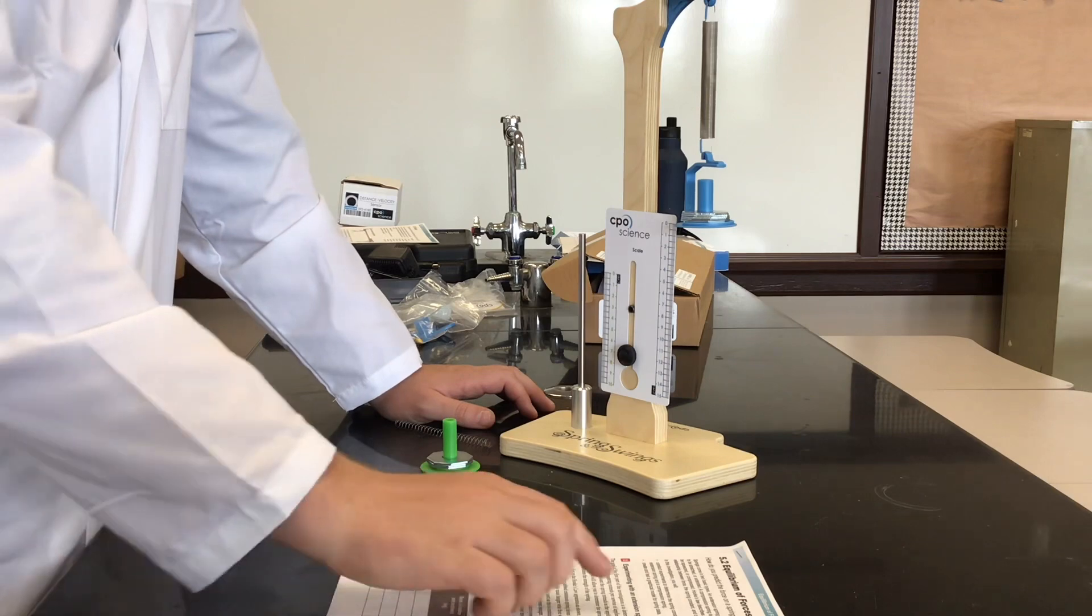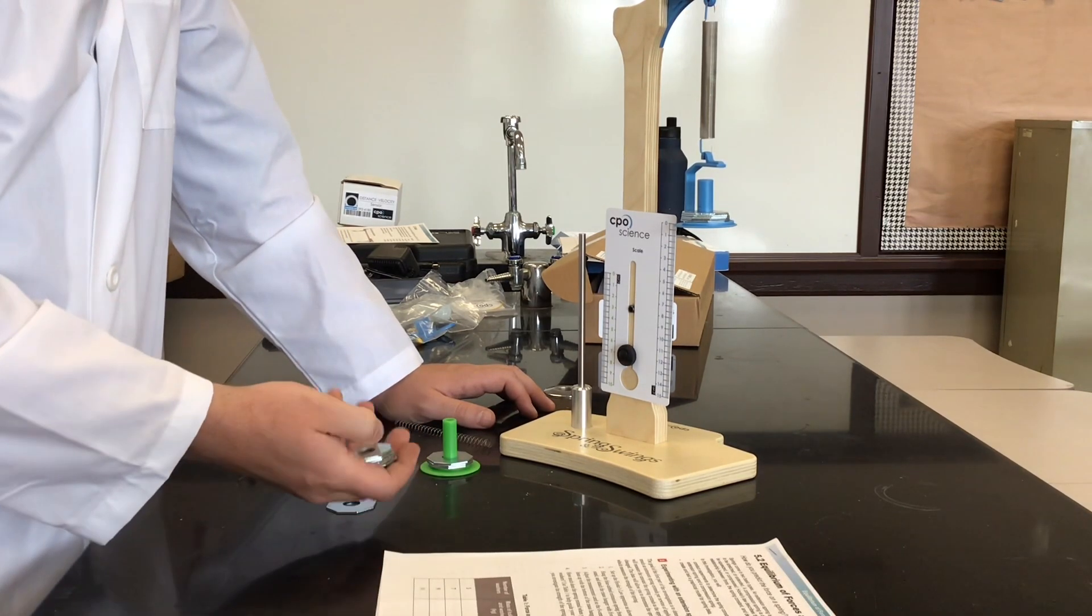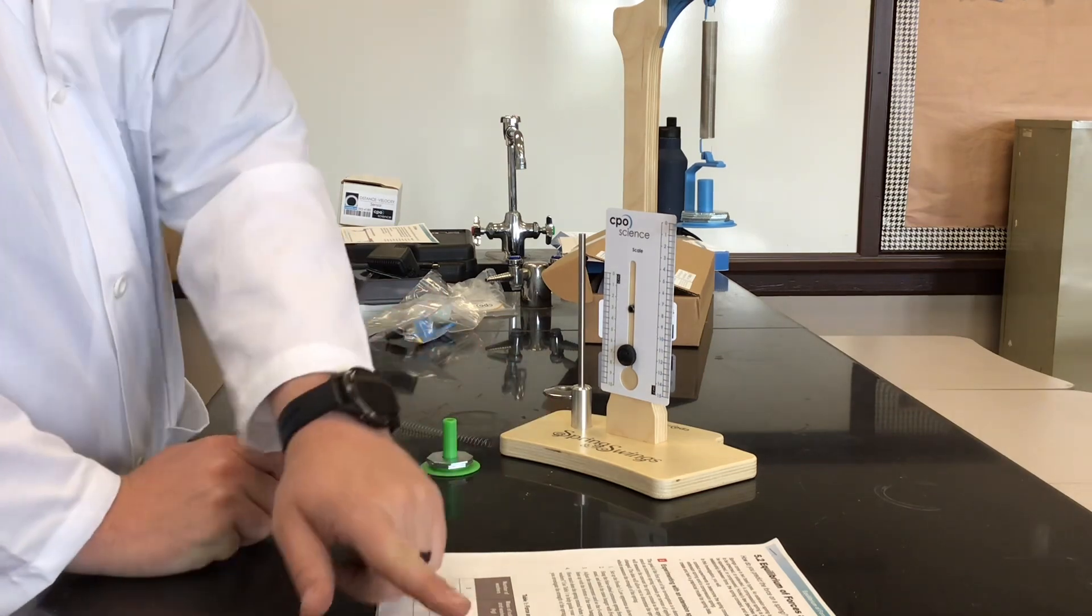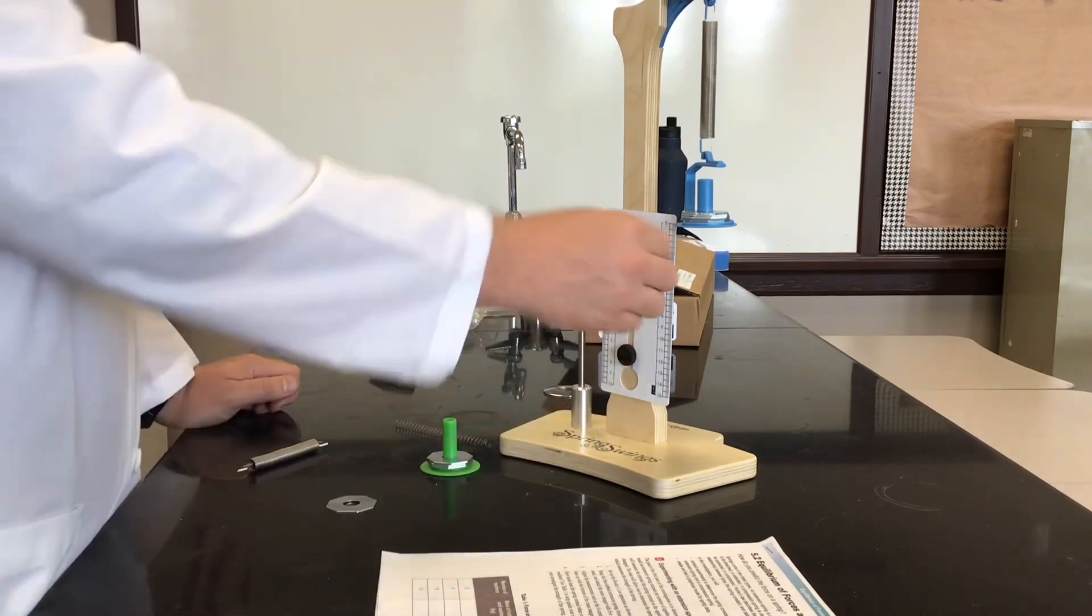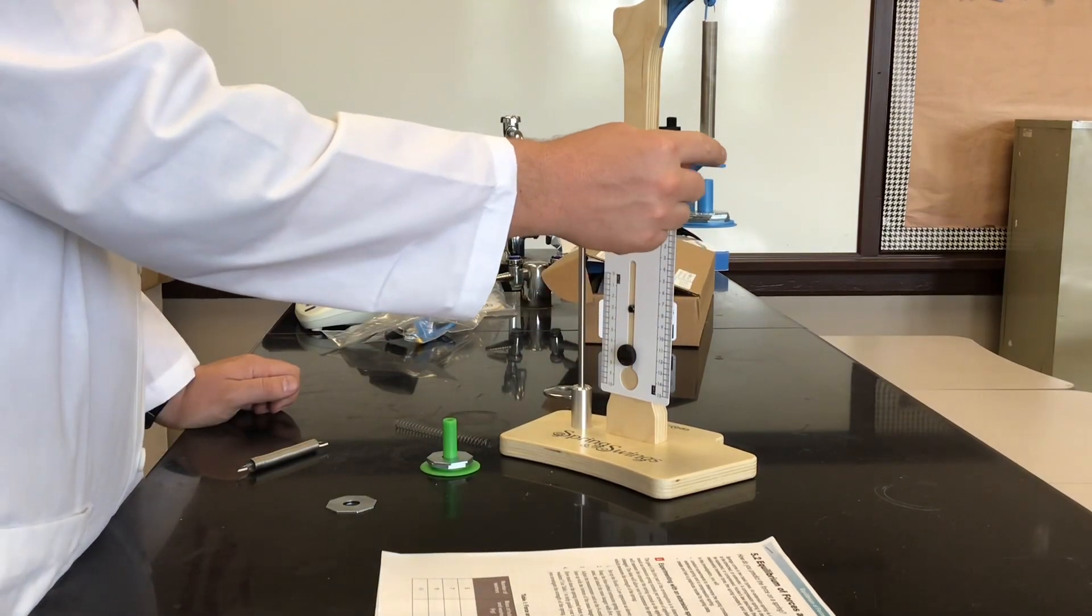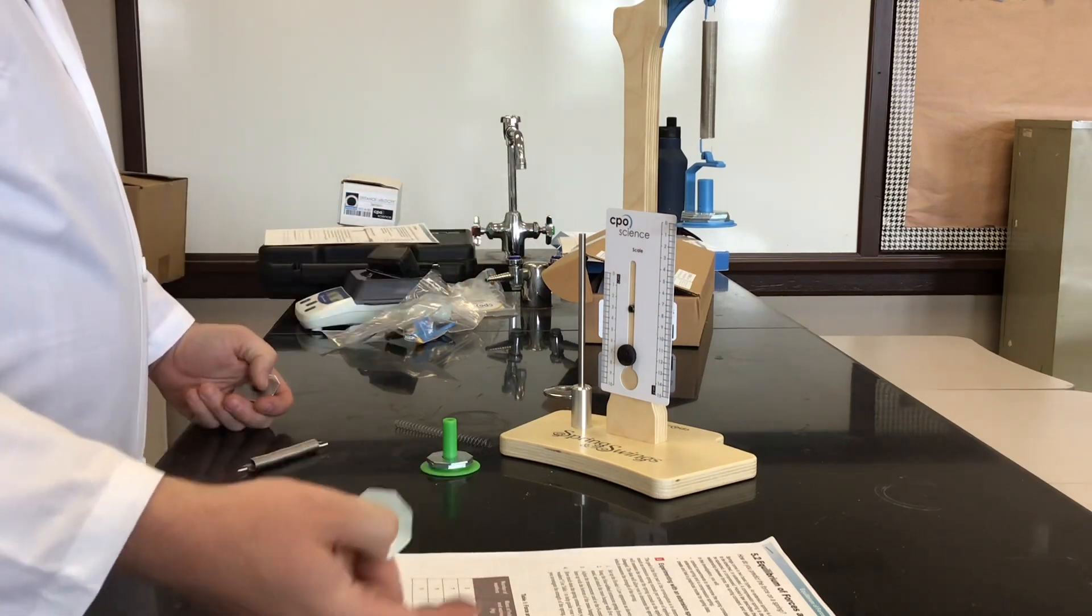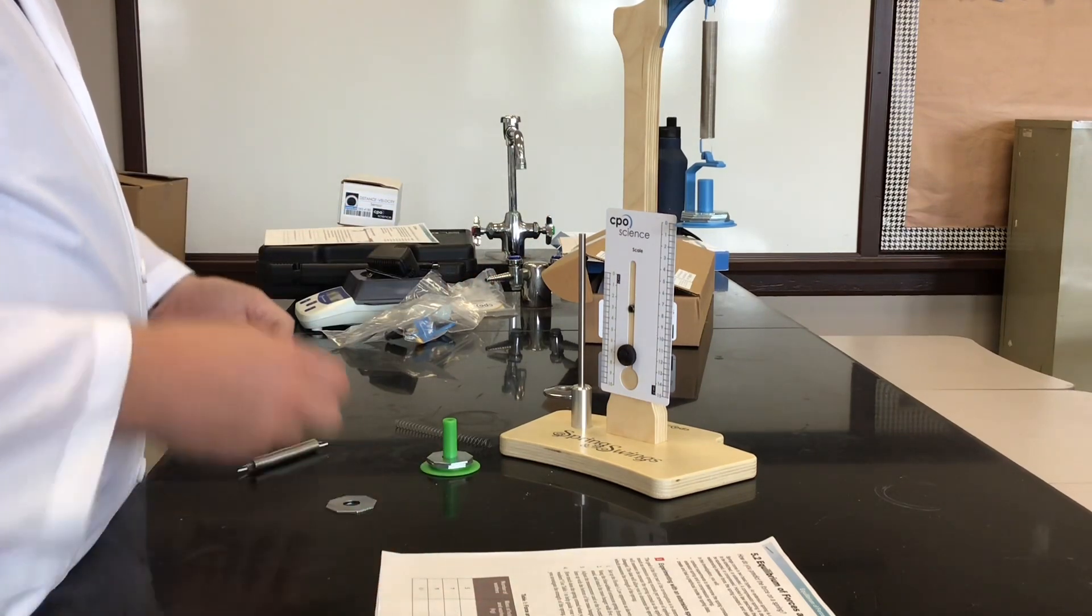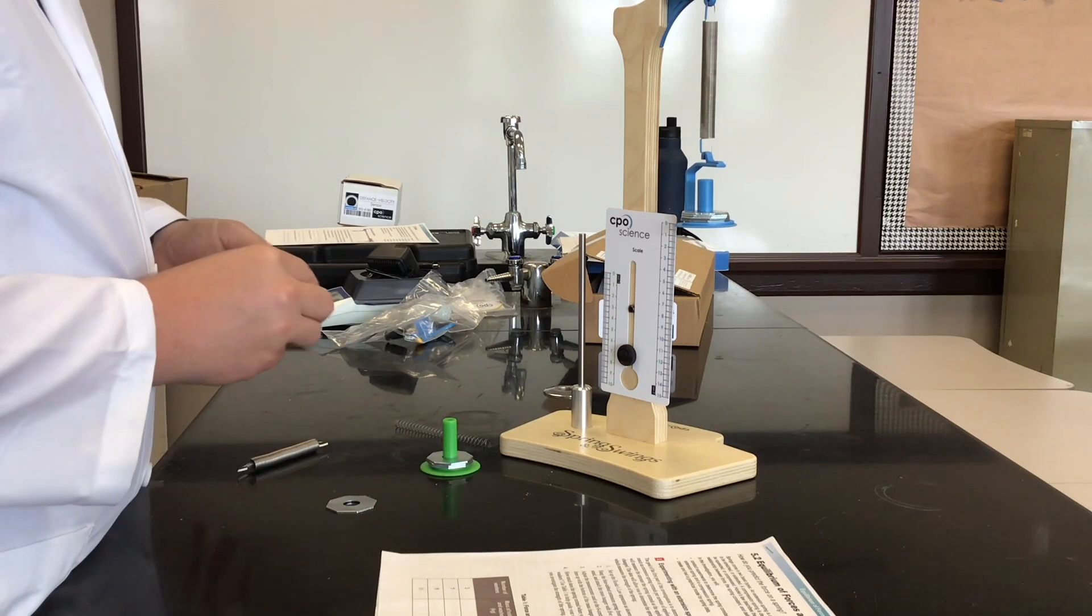So you set it up like that, and then basically all the students are going to be doing is adding washers to it. So currently there's five, the spring's extension is at zero. They can calculate the mass of the holder and the washers. So hopefully beforehand they've done the mass of the plastic piece, they know how much each washer is, and so then they can find the mass, calculate the force, and get spring extension.